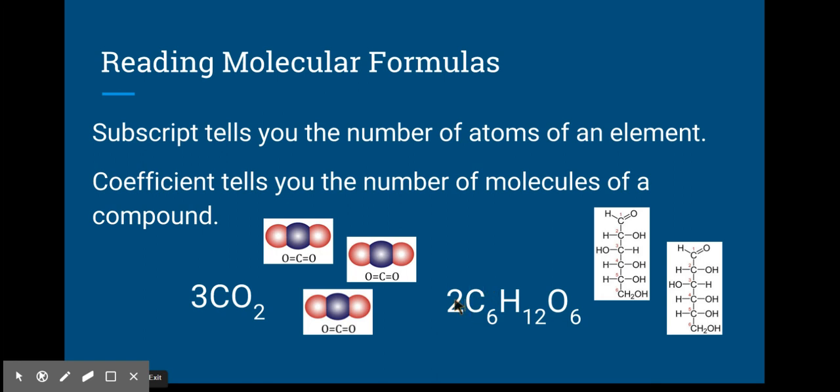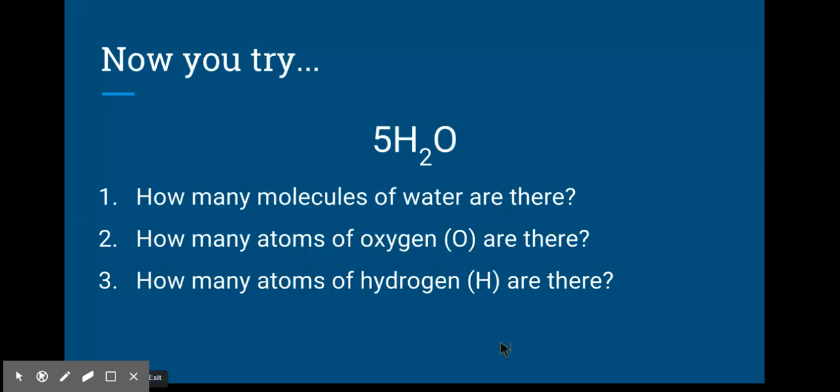So over here again, to figure out my carbons, I would take my two and multiply it times six. Tells me I have twelve carbons. Two times eight—sorry, two times twelve for my hydrogens—gives me twenty-four. Hopefully you can figure out how I'm doing this. You just multiply your subscript and your coefficient to figure out total number of atoms for that element.